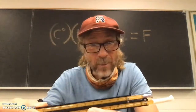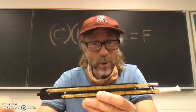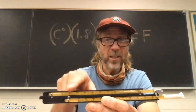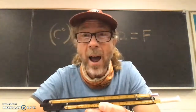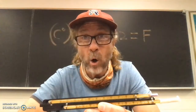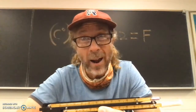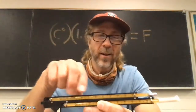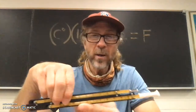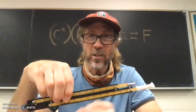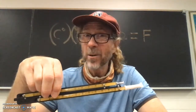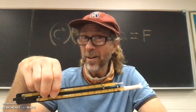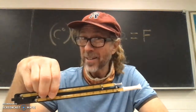One of the thermometers — this top one in this case — is called the dry bulb, like dry. This bottom one is called the wet bulb, like wet.